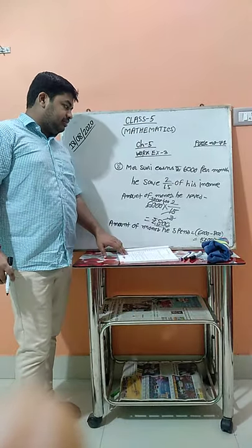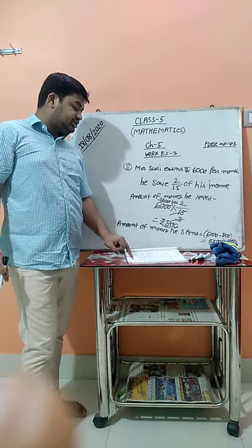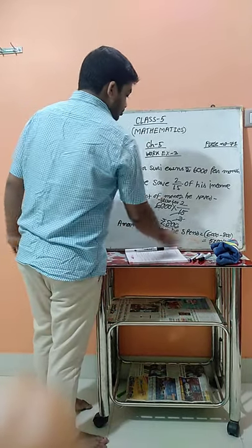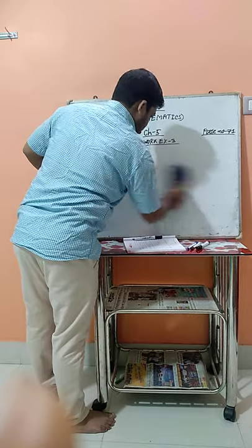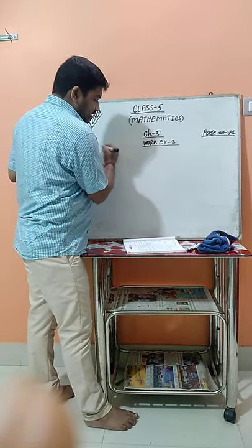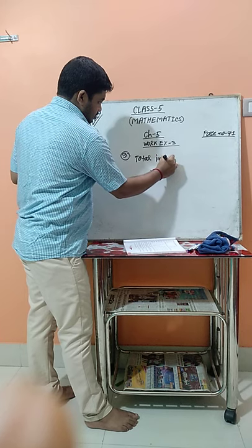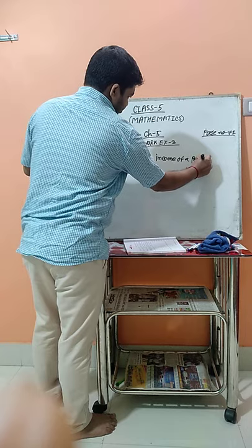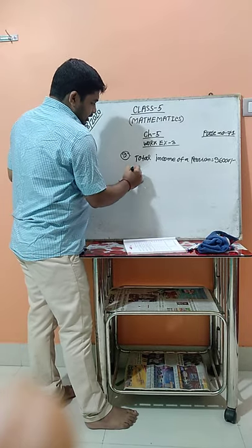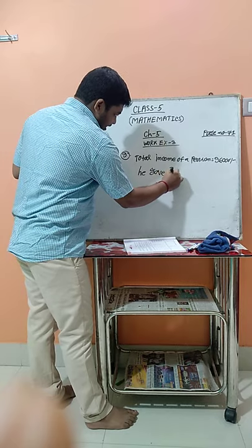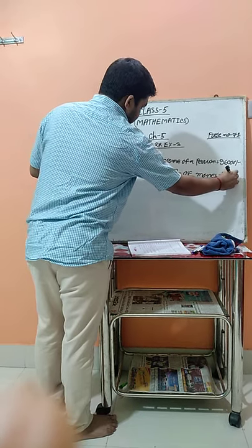Now let's see the next one. A man gave 2/3 of his money to the blind school. He had 96,000 rupees. How much did he give to the blind school? The total income of the person is 96,000. He gave 2/3 of his money to the blind school.